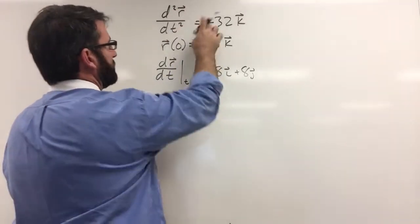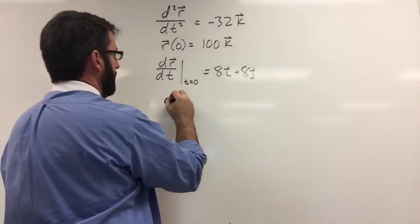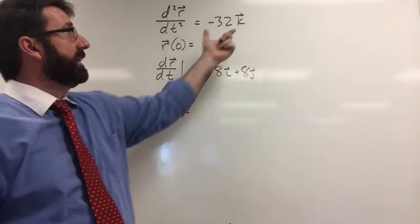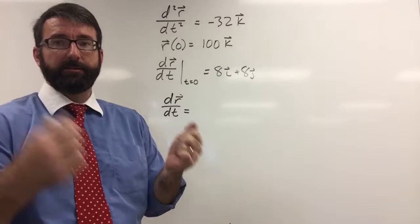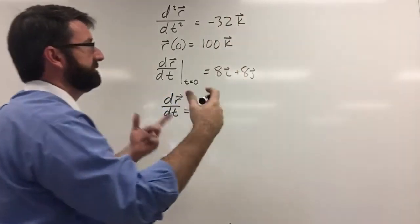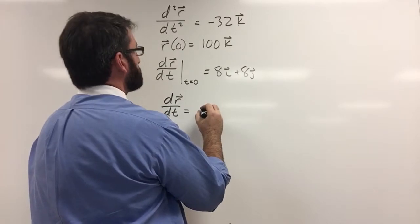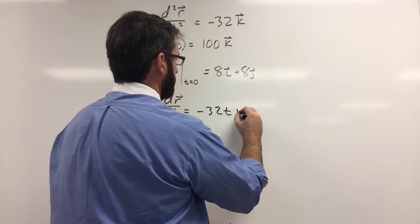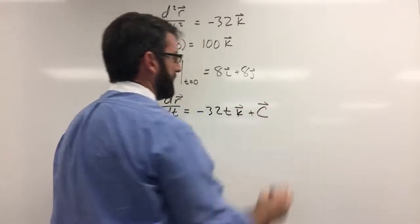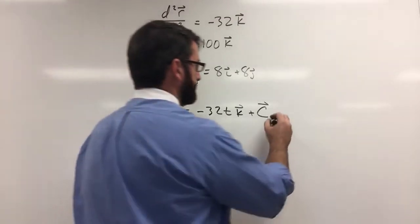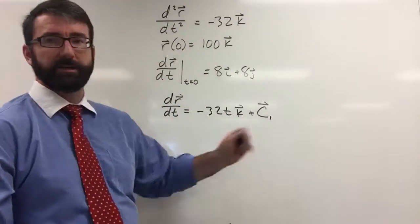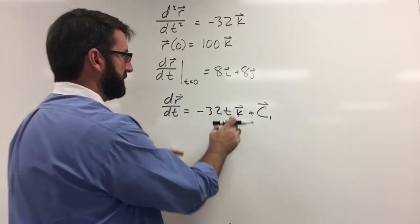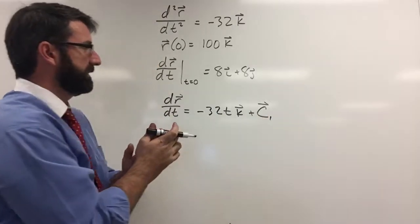So what we're going to do first is we're going to integrate this. So dr dt is going to be equal to negative 32k dt, or negative 32 dt times k. So that's going to be negative 32t times k plus a constant vector. And we're going to call this c1 because we're actually going to need a couple different constants as we do this. So negative 32tk plus vector c1.